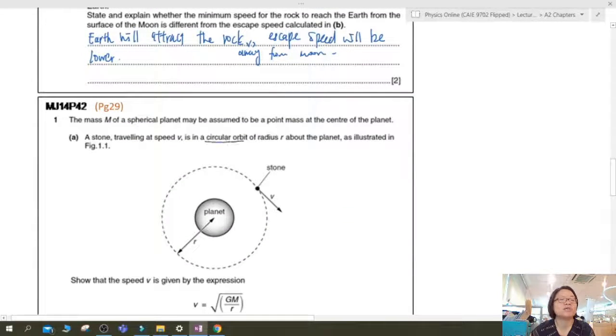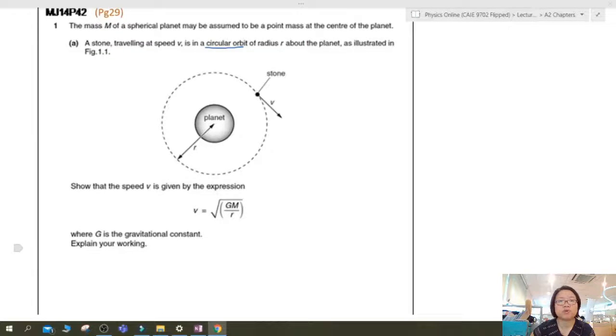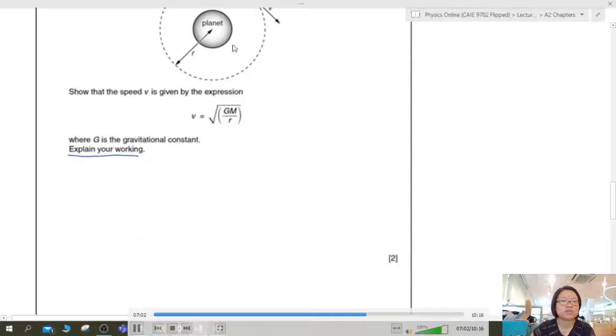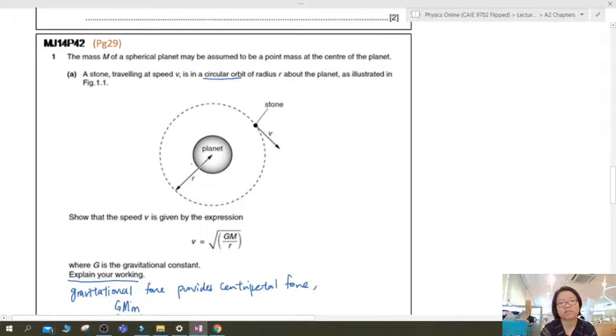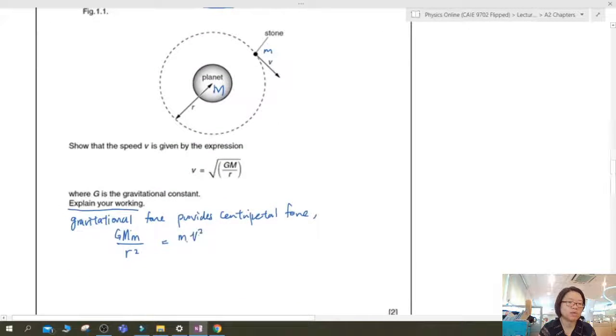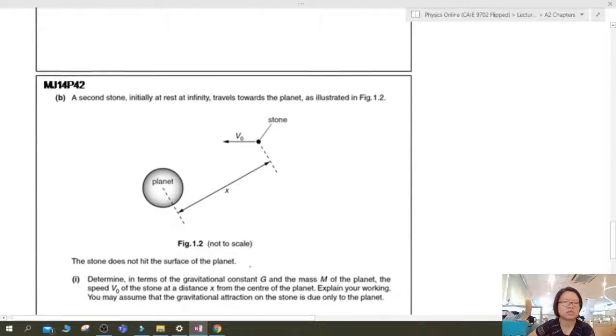Okay, next part. May, June 14, paper 4-2, page 29. So your mass m of a spherical planet may be assumed to be a point mass at the center of the planet. So again, you're given a circular orbit and show that the orbital speed is this one. Explain your working. I showed this in the lecture video already. So I'm just going to quickly talk to you about this. Explain your working. So we need that sentence, gravitational force provides centripetal force. Centripetal force is provided by gravitational force, any form of that. So always check your symbols. G capital M, lowercase m for this one. The distance is r square. This will be equal to centripetal force mv square over r. Simplifying, you will get this. Good job. Proven. One mark for each. There's nothing much to write there.